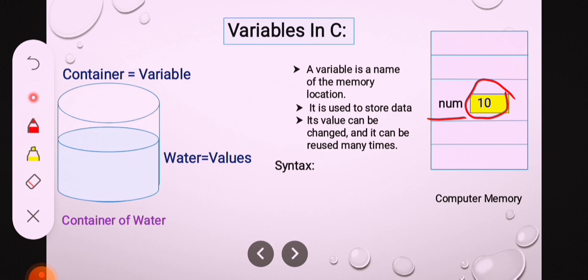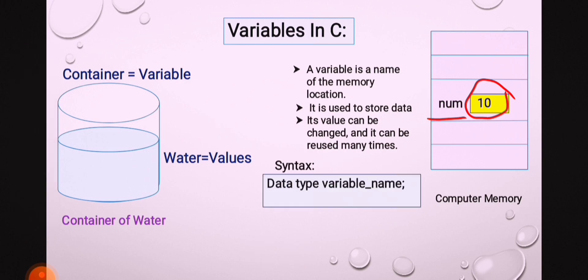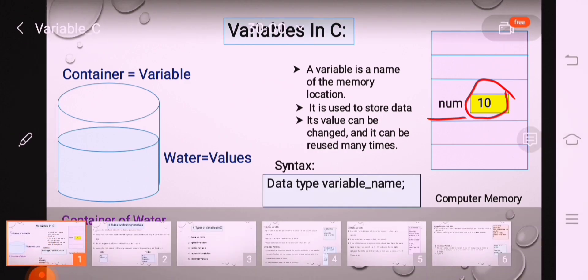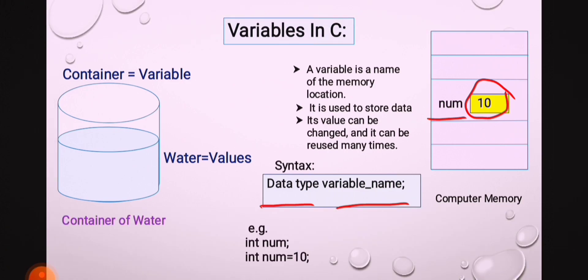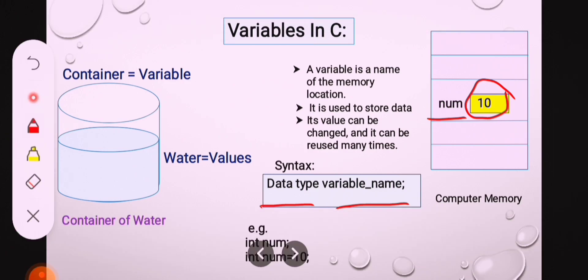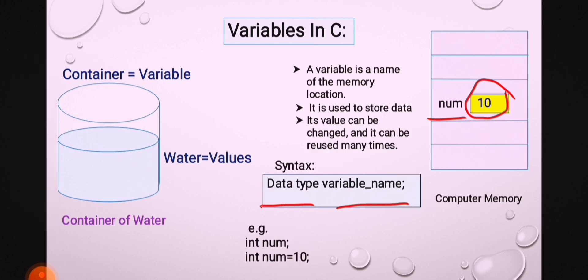Also, it can be reused many times. The syntax of variable declaration is: data type and variable name. For example, int num. Int is the data type and num is the variable name. This is a declaration.